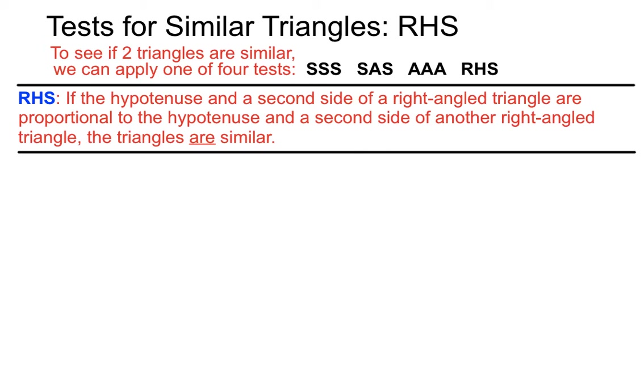This one states if the hypotenuse and a second side of a right angle triangle are proportional or in the same ratio to the hypotenuse and the second side of another right angle triangle, the triangles are similar. Best to see this in an example and see if it makes sense then.